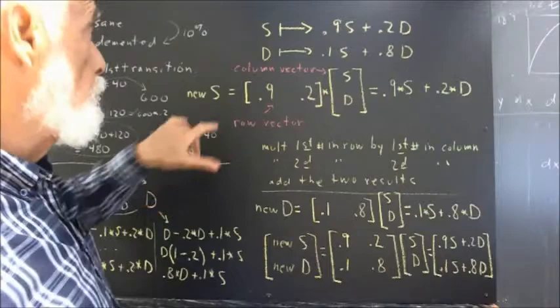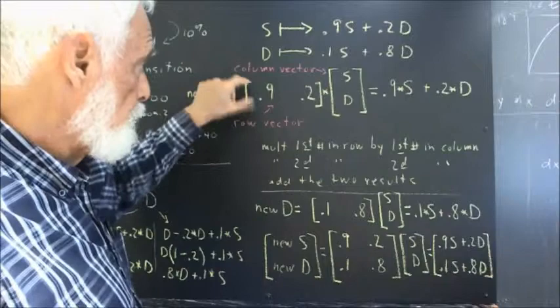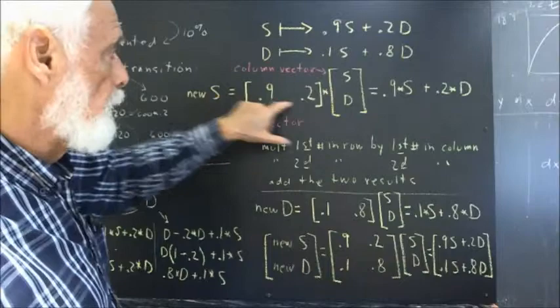Next I do this. I'm going to say, okay, well, the new value of S is this. The new value of D would be this. I'm going to write this as a row vector. I call this a row vector. I put a bracket here and a bracket here, and put the numbers 0.9, 0.2.